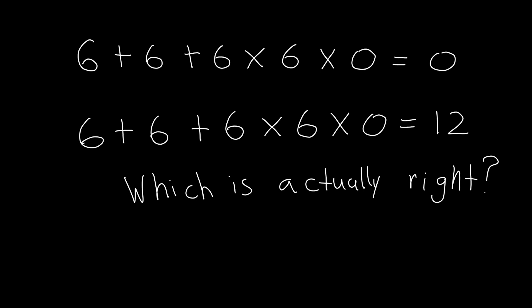The equation is 6 plus 6 plus 6 times 6 times 0. Some people say the answer is 0. Others confidently say it's 12 and both sides are ready to fight over it.